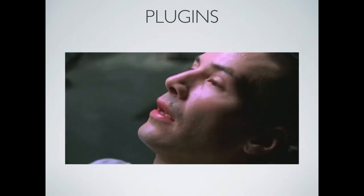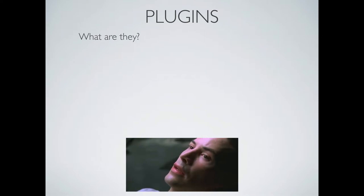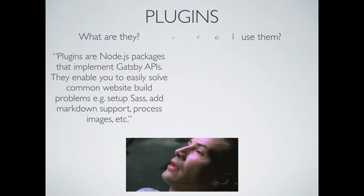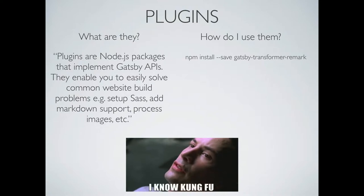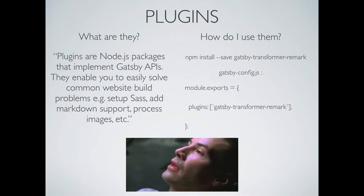These plugins hide all the heavy lifting so you can bring in data from different data sources. At the end of the day, they're all node packages installed via NPM. One example is Transformer Remark — say you want to write your blog posts in Markdown. You NPM install it, it links into your Gatsby project and that API, you add one line of config, and then your blog posts written in Markdown are brought in and turned into GraphQL-queryable data.